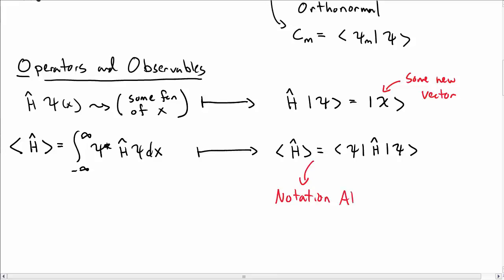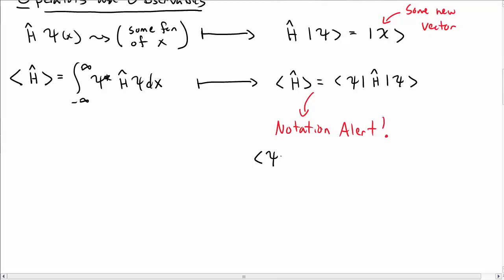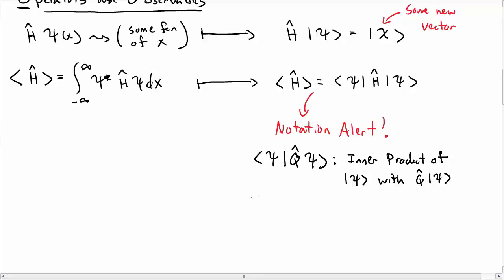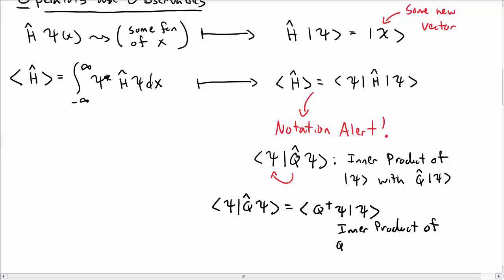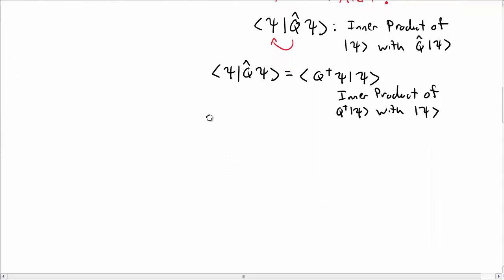A notation alert on how expectation values are sometimes written: the expectation value is written as bra psi q-hat ket psi, where q is some operator, which means the inner product between psi and q-hat psi. A related notation is to move q-hat over by taking its Hermitian conjugate, so we write the Hermitian conjugate of q on psi in a product with psi — meaning the inner product of q-dagger psi with psi itself.